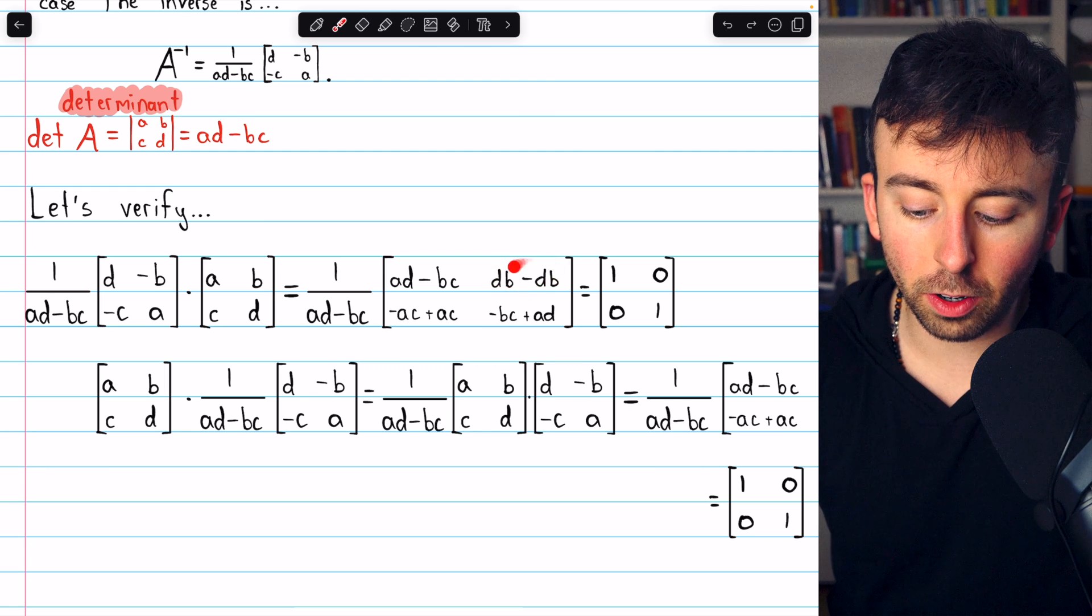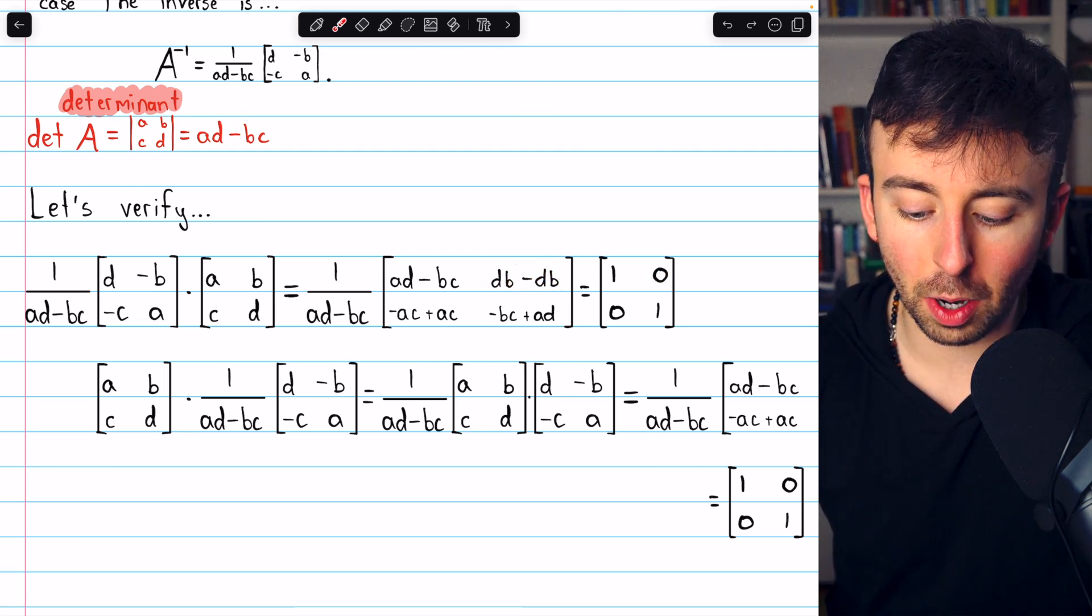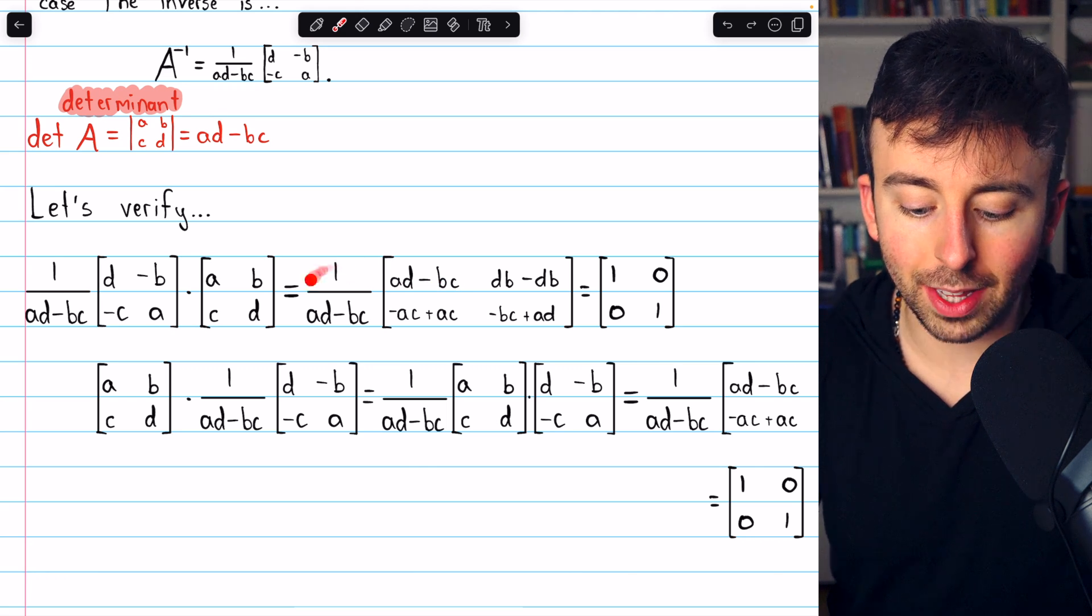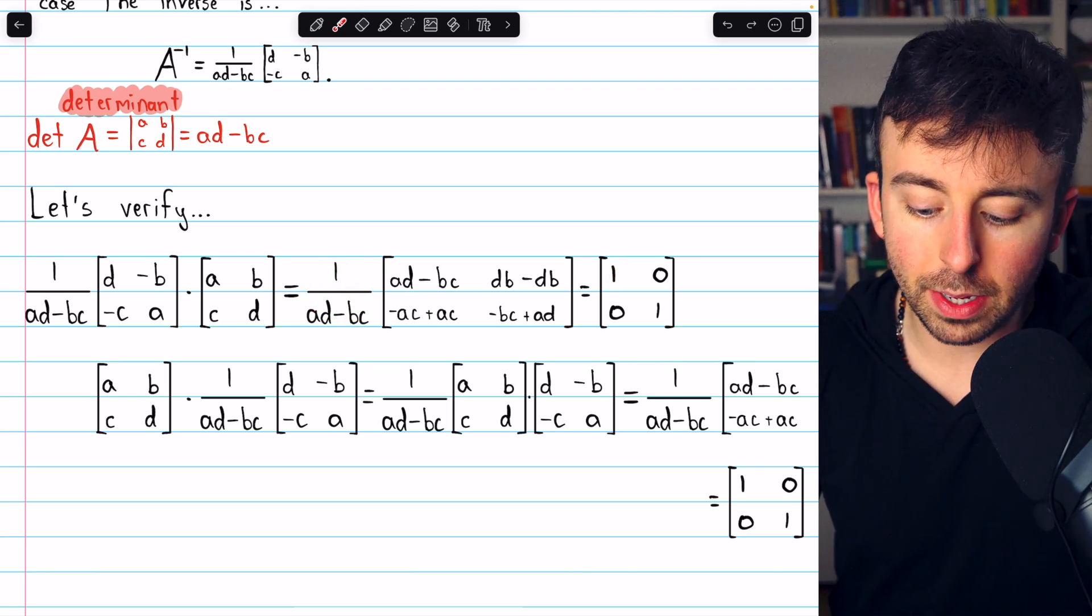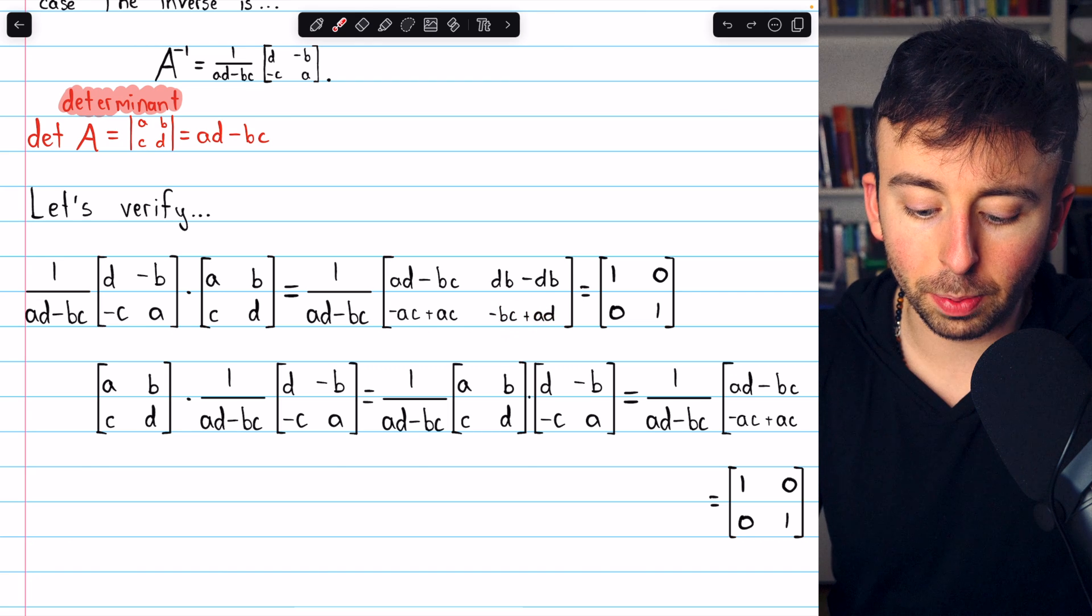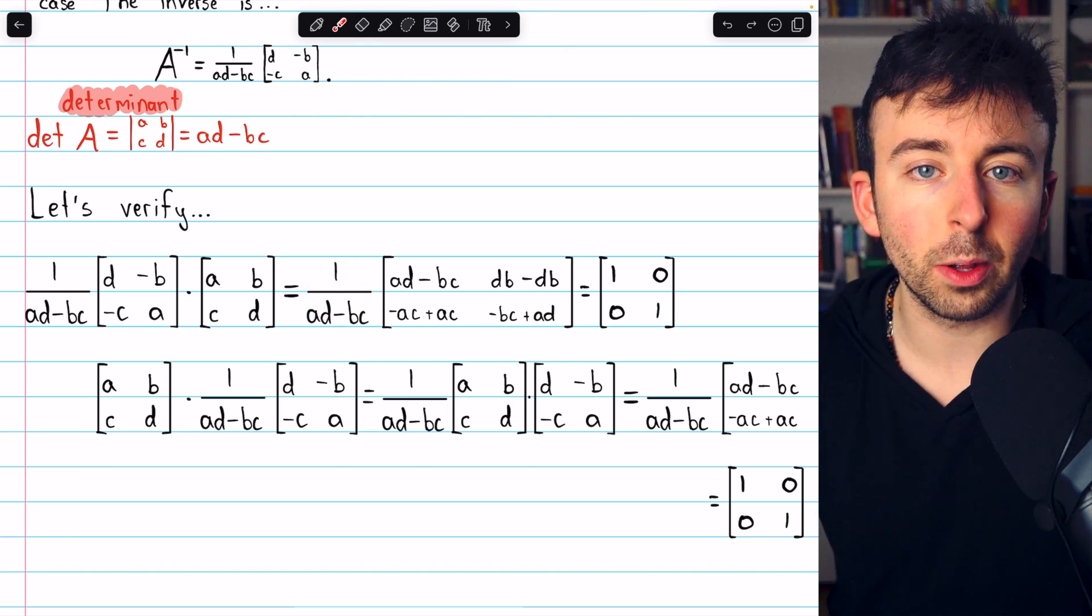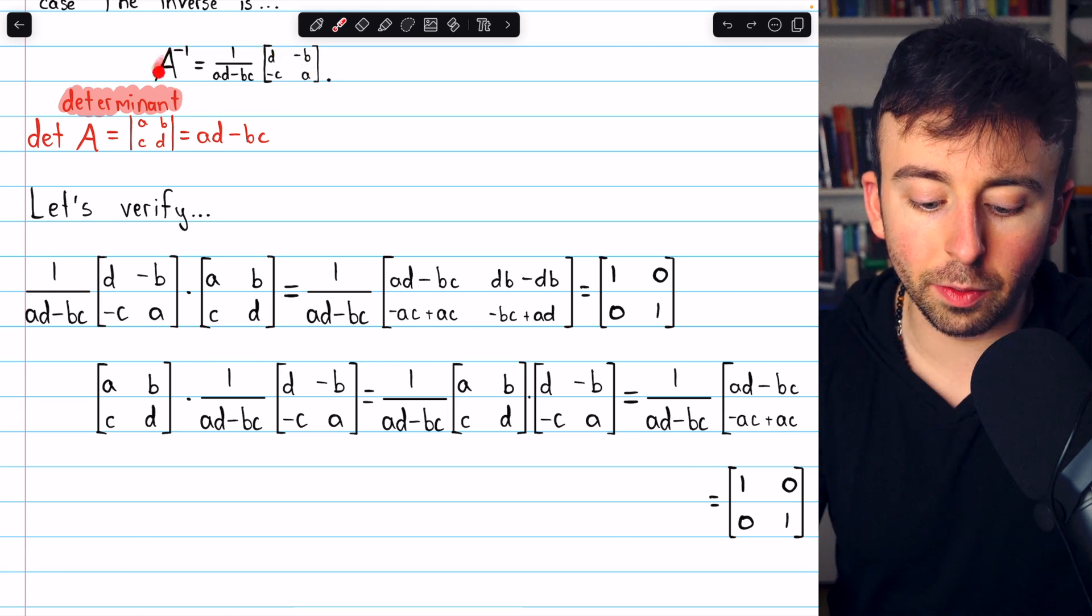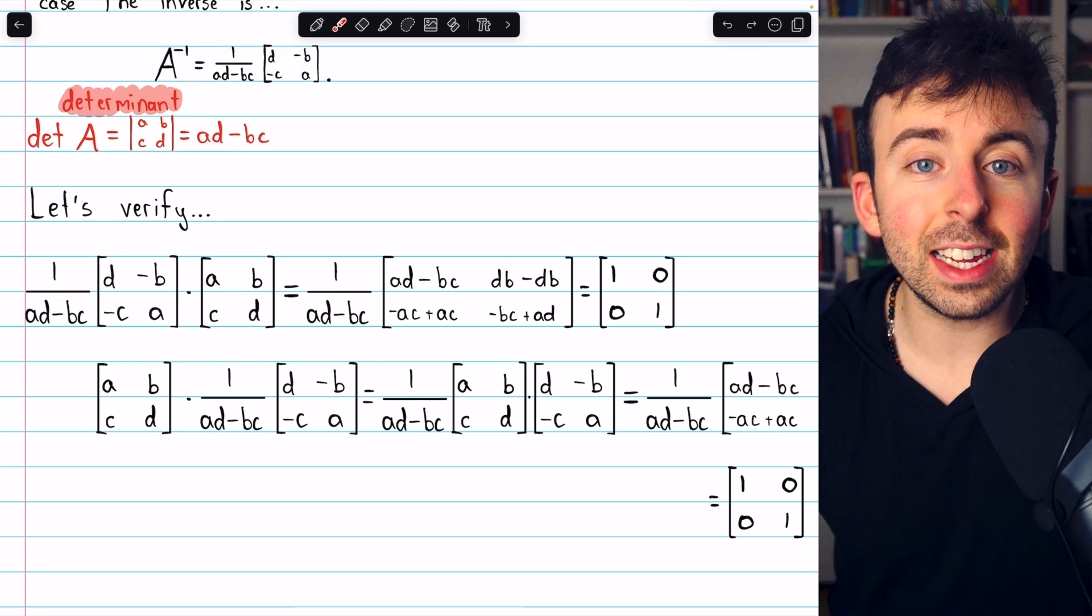And this helps us to see how that obviously cancels out to 0, just like this entry here will cancel out to 0. Meanwhile, AD minus BC multiplied by this scalar cancels out to 1, and negative BC plus AD multiplied by this scalar also cancels out to 1.